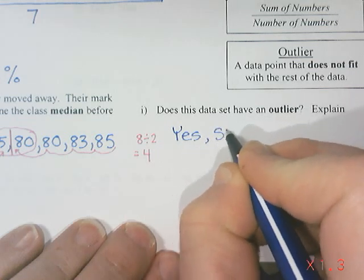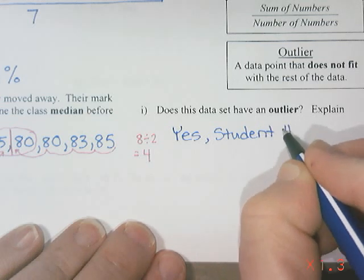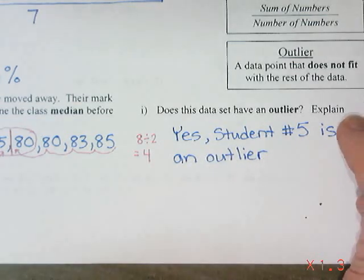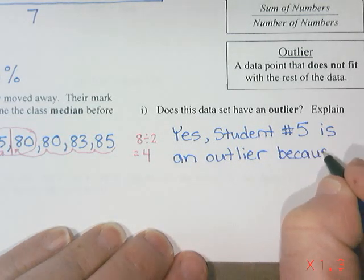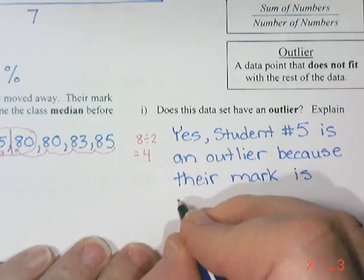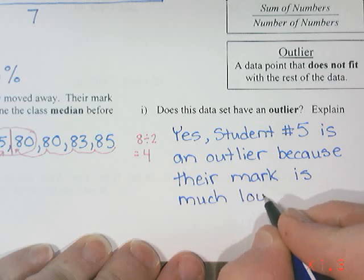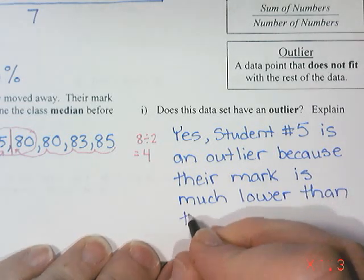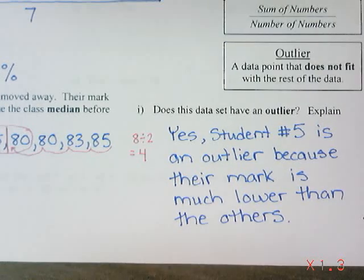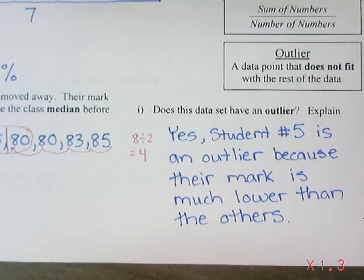So I would say 32 is quite a bit lower, which makes it an outlier. Yes, student number five is an outlier because their mark is much lower than the others. The same would apply if a student had 100% — that would be quite a bit higher than everyone else and could also be considered an outlier. An outlier is just a piece of data that's a little too high or too low compared to the rest.